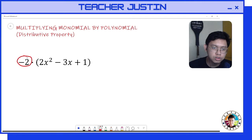So their product will be negative 2 times 2, that is negative 4. Then we just copy the variable x squared. Next, let's multiply negative 2 to negative 3x.